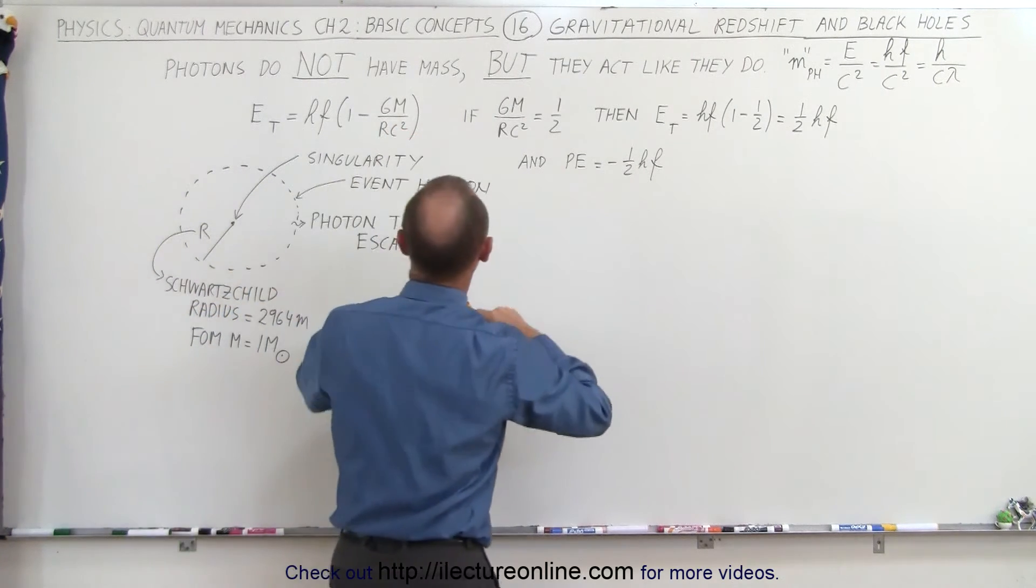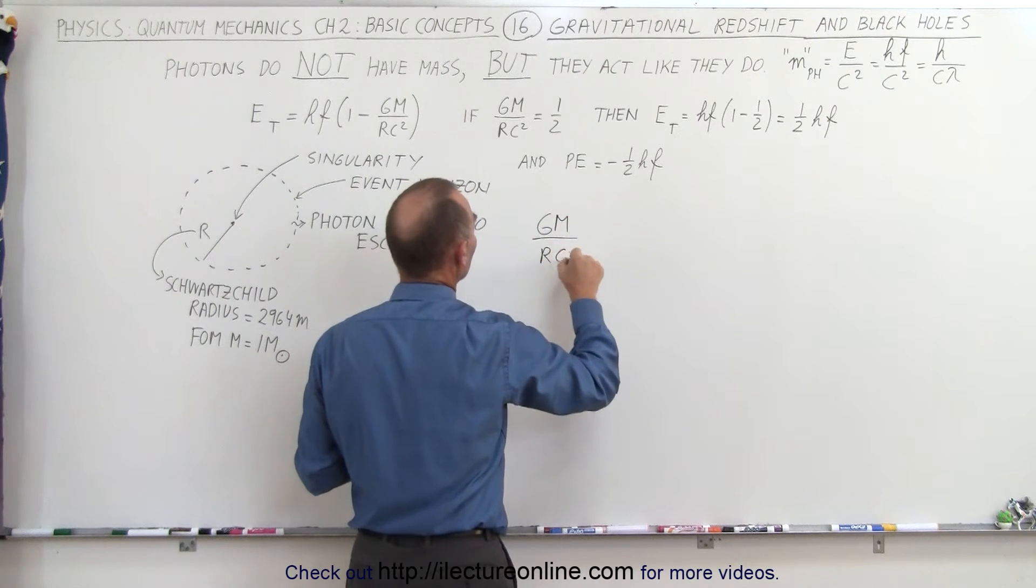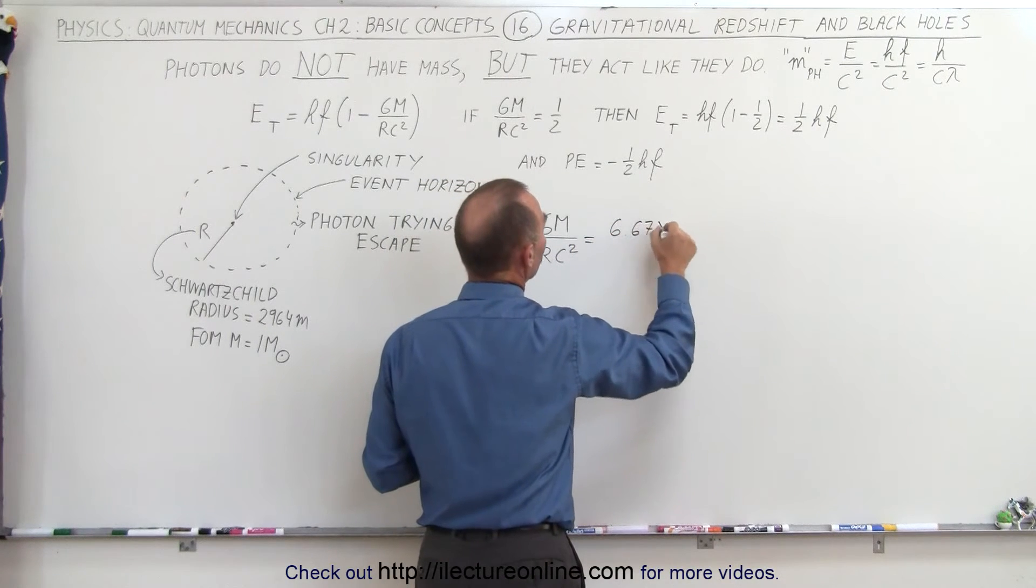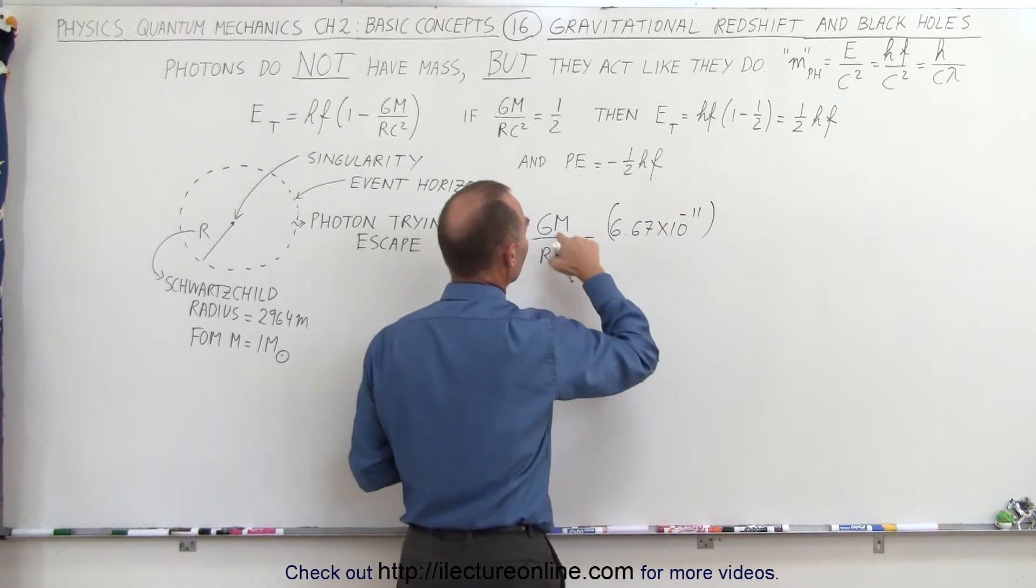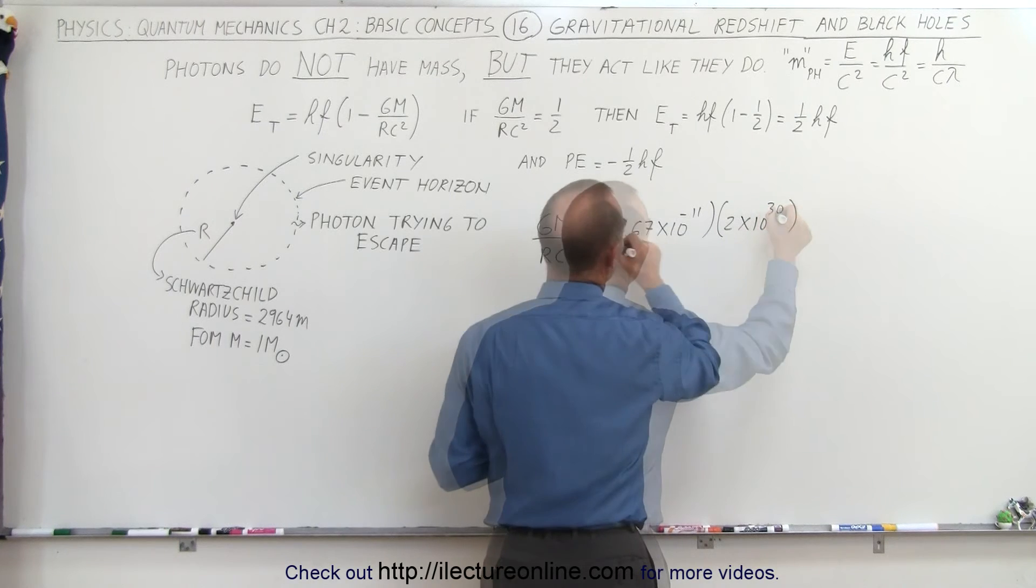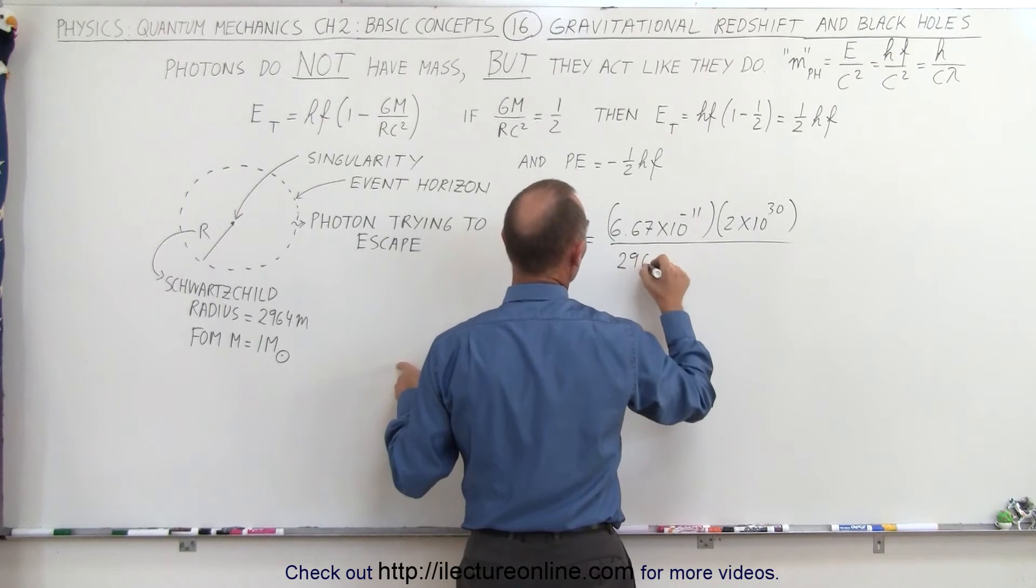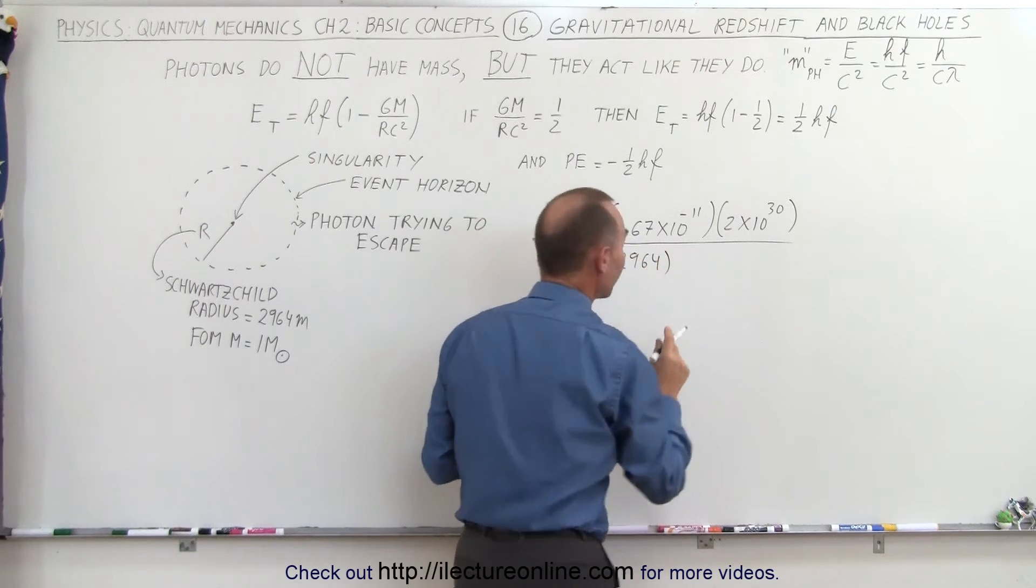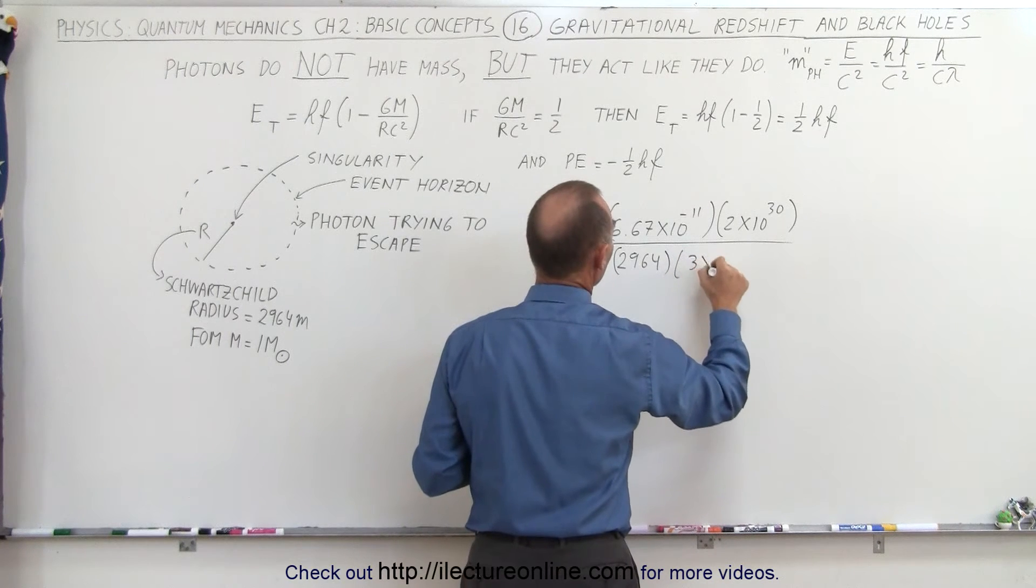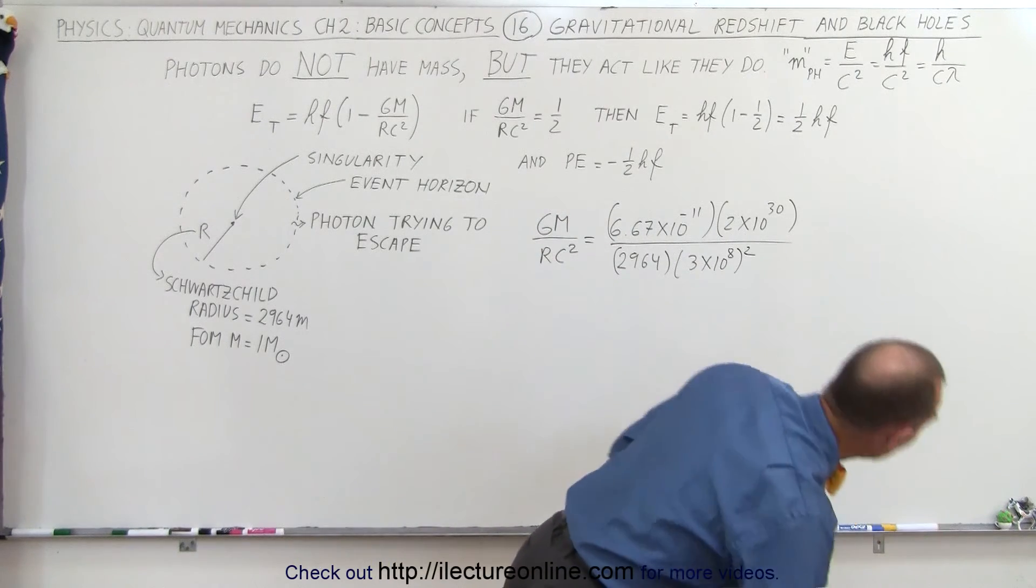So let's calculate GM/Rc² for a black hole. GM over Rc squared, so again that would be 6.67 times 10 to the minus 11, the universal gravitational constant. Let's say we have one times the mass of the Sun. The radius of a black hole, the Schwarzschild radius, would be 2,964 meters. That would be for one solar mass black hole. And then still we have 3 times 10 to the 8th quantity squared, that would be the speed of light squared.